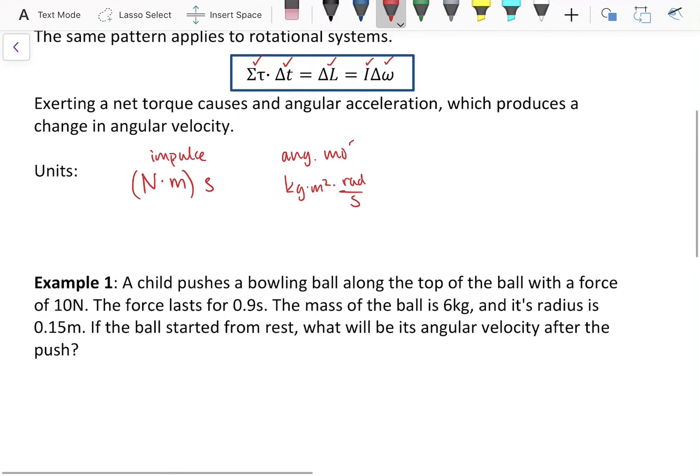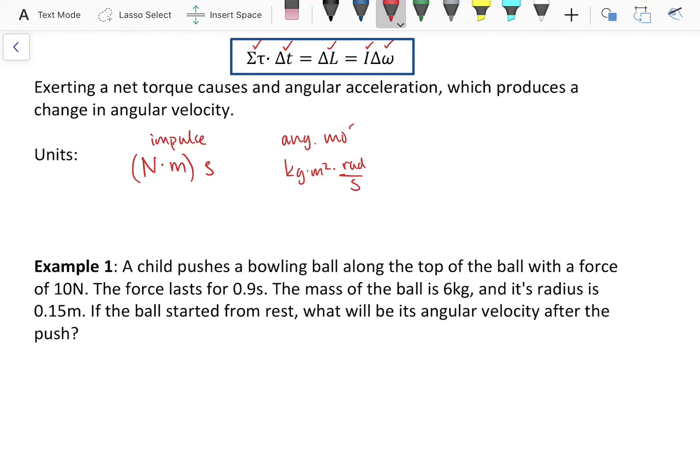Now, it doesn't look like those two things are necessarily the same, but when you remember that newtons is kilograms times meters per second squared times meters times seconds, then we can see that one of those seconds cancels, the meters become squared, and you have kilograms meters squared over seconds. Remember, the radians are a unitless number.